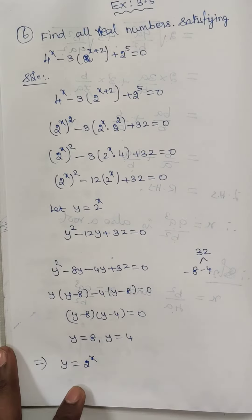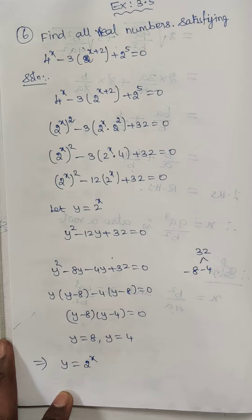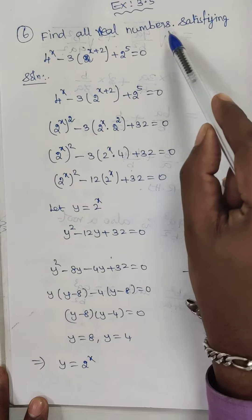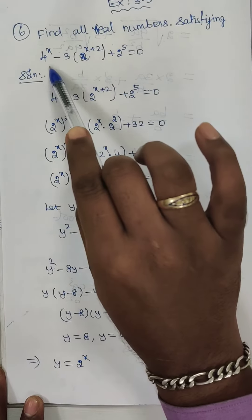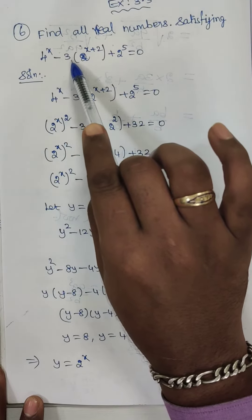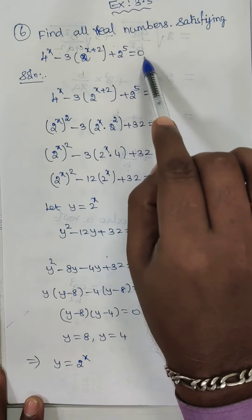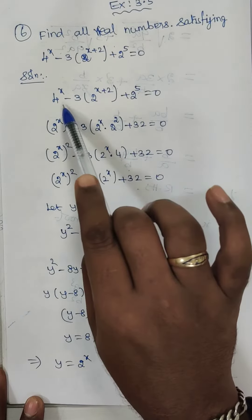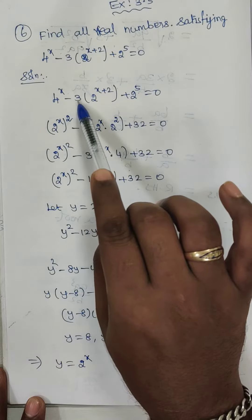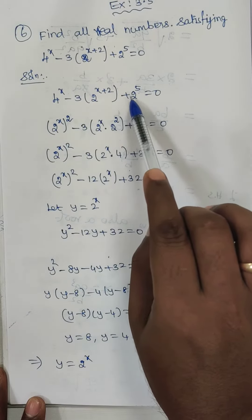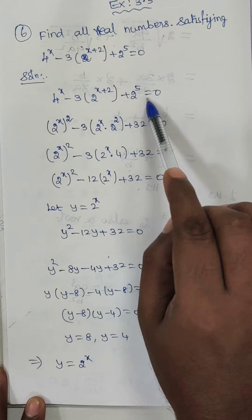Hi students, today we are going to discuss exercise 3.5, question number 6. Find all real numbers satisfying 4 power x minus 3 into 2 power x plus 2 plus 2 power 5 is equal to 0. So, the given equation is 4 power x minus 3 into 2 power x plus 2 plus 2 power 5 is equal to 0.